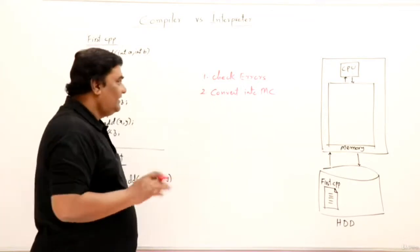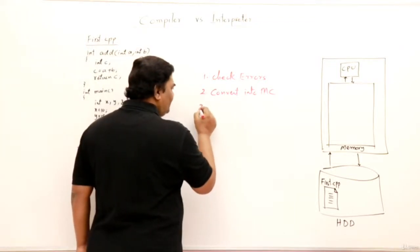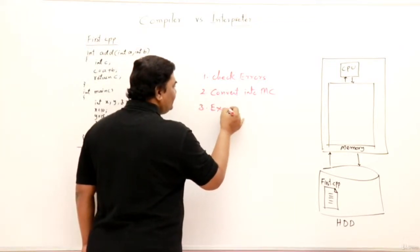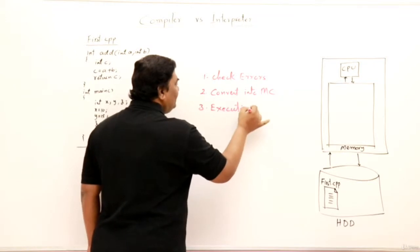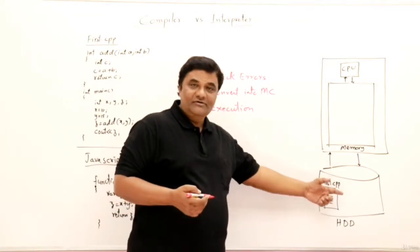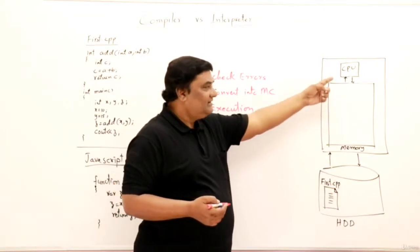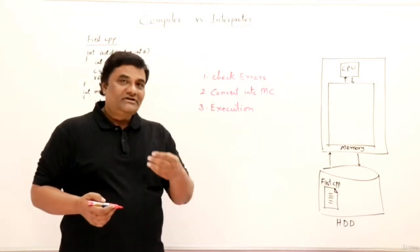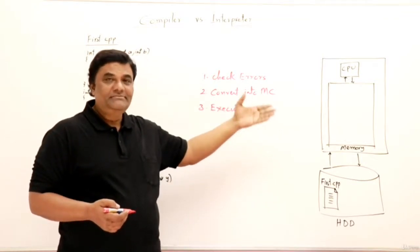The third thing involved is execution of a program, running the program. Programs are brought into the main memory and executed by the CPU. The machine instruction will come inside the main memory and CPU will execute it.